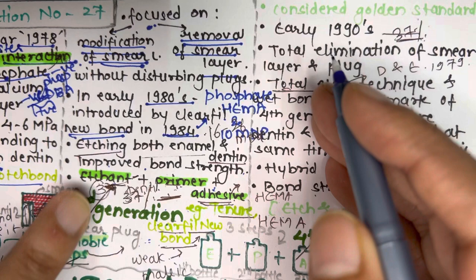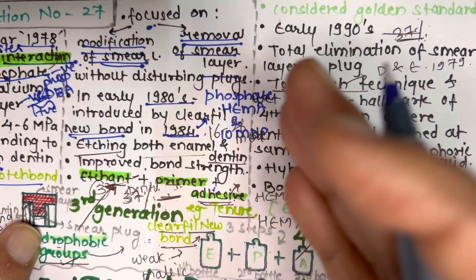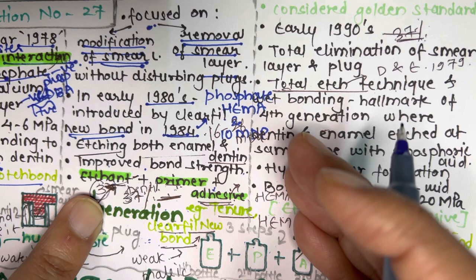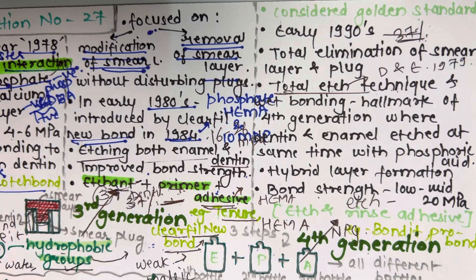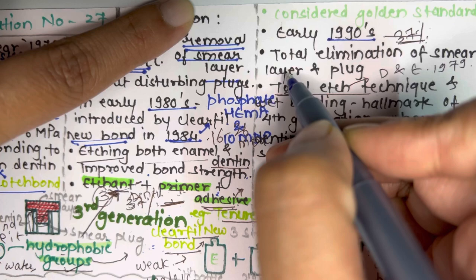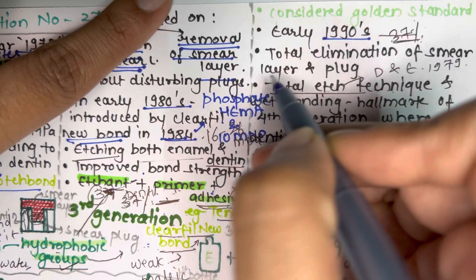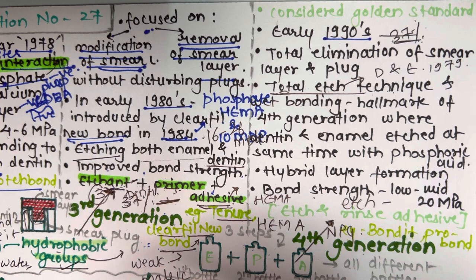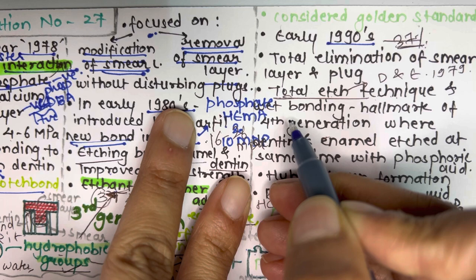Because of the various disadvantages of the third generation, the fourth generation was introduced to improvise. The fourth generation is considered the gold standard of dentine bonding agent, introduced in the 1990s. It relied on total elimination of the smear layer and plug. There are two major hallmarks of this generation: the total etch technique and wet bonding.